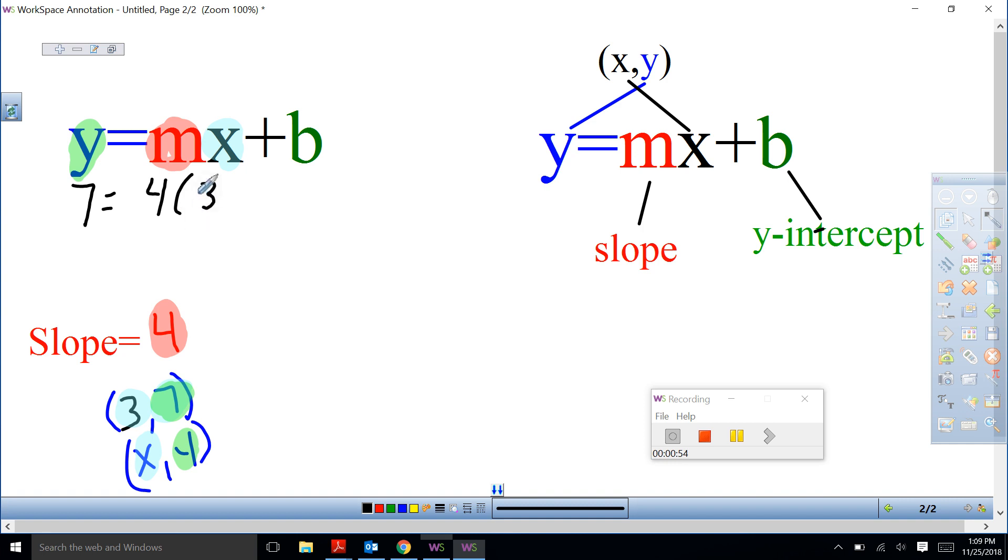The only thing we don't have is our B. We're going to plug in our slope for the M, our X for the X, and the Y for the Y, and then solve for B, which is our Y intercept.